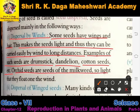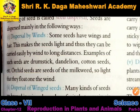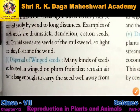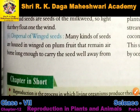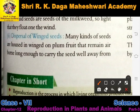Orchid seeds — seeds of the milkweed — are so light they float on the wind. Orchid seeds bhi bahut halke — lightweight — hote hain jo easily wind ke dwara blow kar diye jate hain, aur wind unhe easily carry karti hai from one place to another.